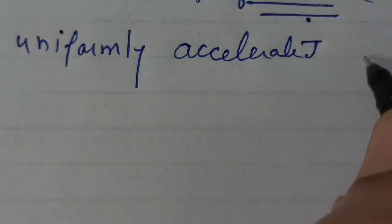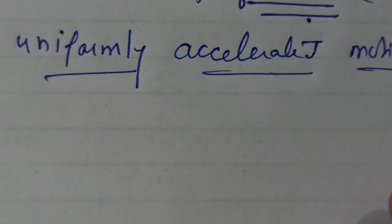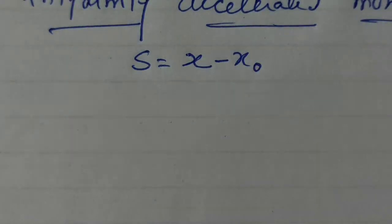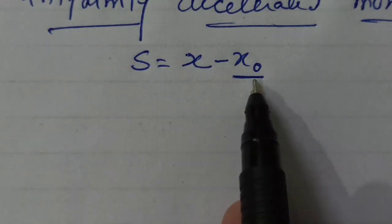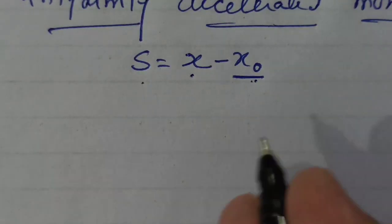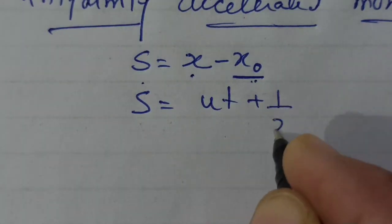Now the next — third — graph is for uniformly accelerated motion. Here the motion covers equal time intervals but is also accelerated. In this case, the distance s equals ut plus half a t squared. So x minus x₀ equals ut plus half a t squared, which means the change in position is directly proportional to the square of time.